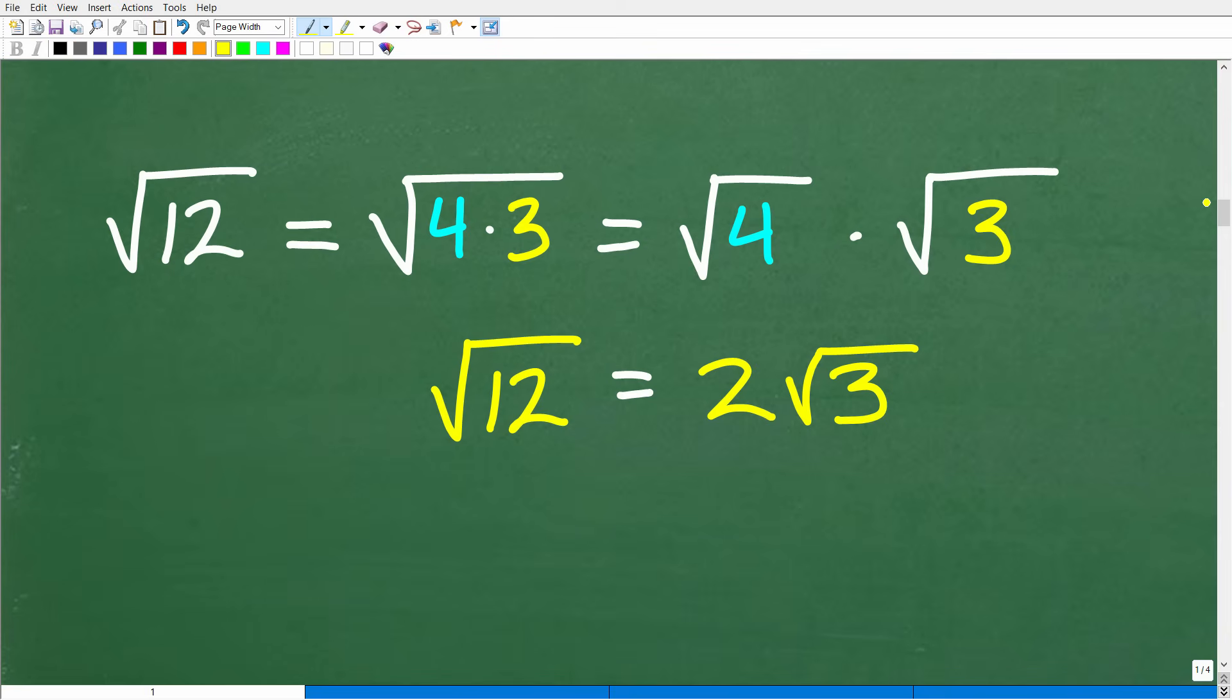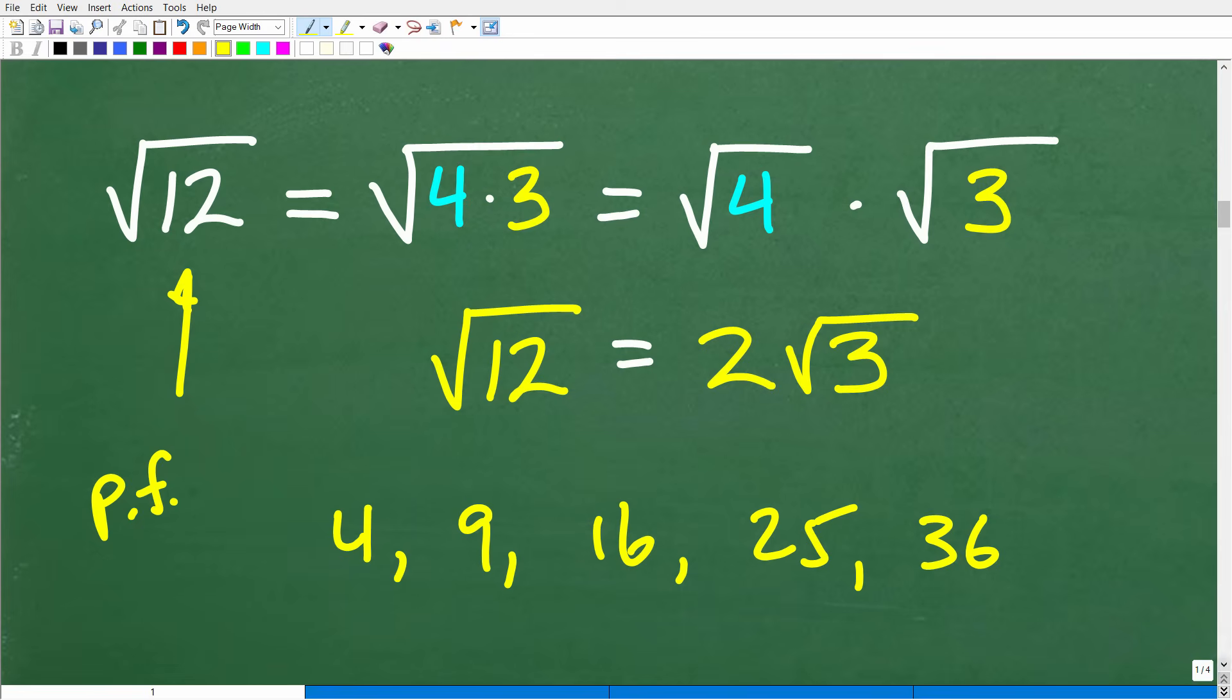So we want to simplify this. We don't know if we can simplify this, but we certainly know that there are factors of 12. So what you want to be thinking about is something called perfect square factors. Perfect squares are numbers like 4, 9, 16, 25, 36. Why would these be perfect squares? Because I can take the square root of these values right here nice and easily without the aid of a calculator. Square root of 4 is 2, square root of 9 is 3, square root of 16 is 4, et cetera.